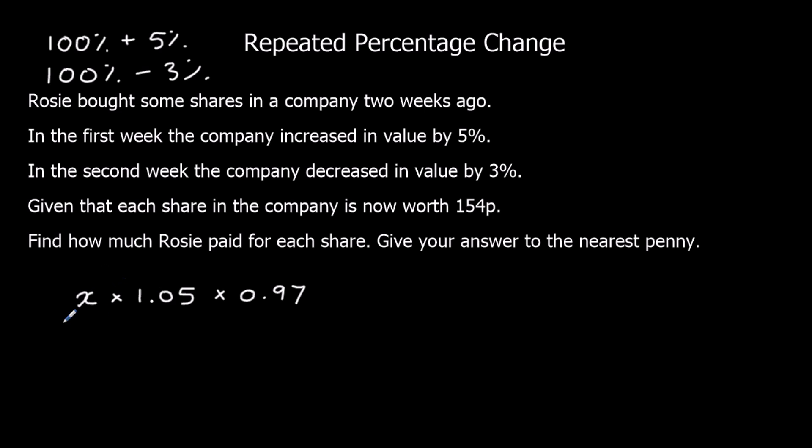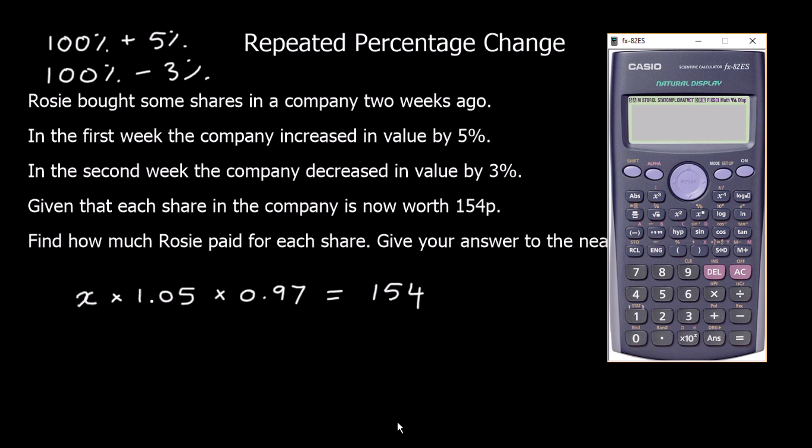So our original amount was multiplied by 1.05 to get how much it was worth at the end of the first week. Then multiplied that answer by 0.97 to find out how much it's worth at the end of the second week. And the answer is going to be 154. So we're going to undo this calculation and find out what X is.